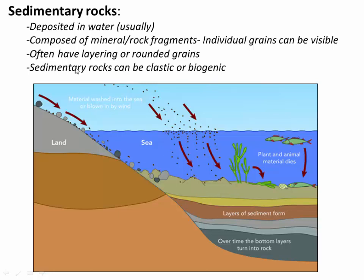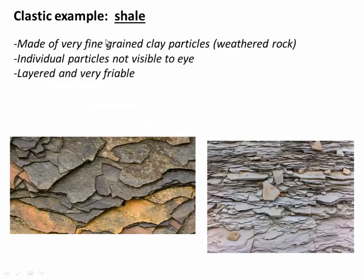We can often subdivide sedimentary rocks into two categories: clastic or biogenic. A clastic sedimentary rock is one made of bits of siliclastic rocks — basically other chunks of rock. A great example is shale. Shale is made of many fine-grained clay particles deposited on the deep ocean bottom. Individual sedimentary particles are not visible to your eye, but shale quite commonly appears layered and friable — evidence that tiny clay particles settled in different depositional events, becoming individual layers. Shale looks very friable, homogeneous, and dark, layered but without individual grains visible to the eye.